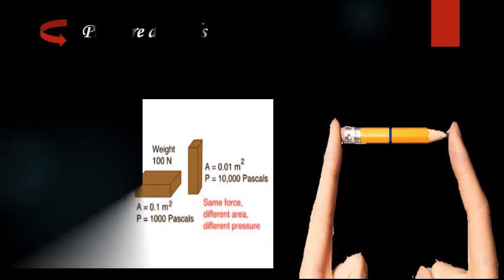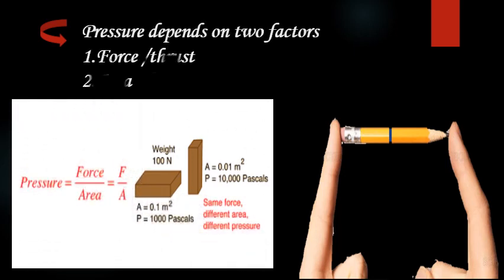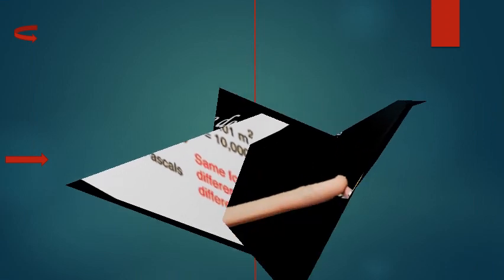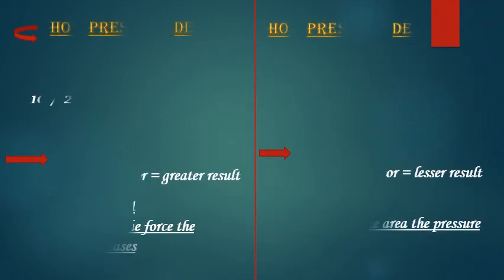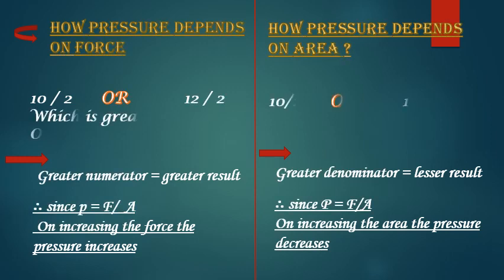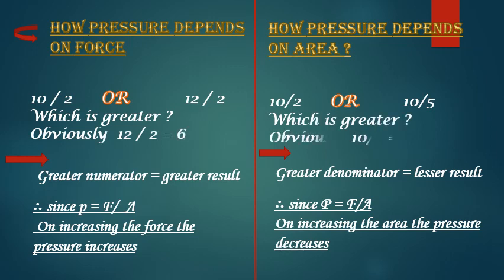Pressure depends on two factors: the first is the force or the thrust, and the second is the area. If we divide 10 by 2 and then divide 12 by 2, which gives the greater result? Greater the numerator, the greater will be the result. The same is the case with pressure — force is in the numerator side, so if force is more, then pressure will be more. On increasing the force or the thrust, the pressure increases.